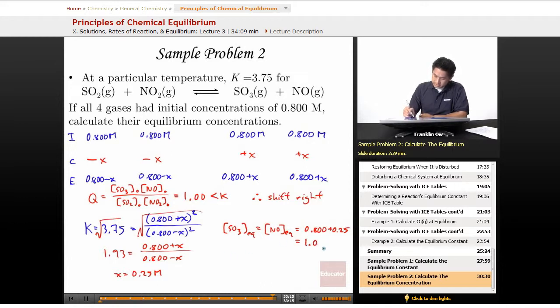That's going to be 1.050 molar. And the concentration of SO2 at equilibrium is equal to the concentration of NO2 at equilibrium. And that's going to be equal to 0.800 minus 0.25. And we're going to get 0.55 molar for these guys.